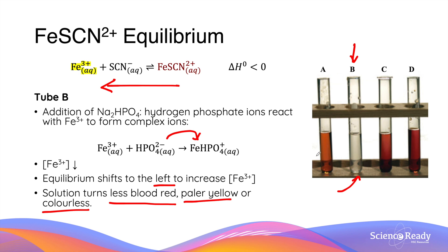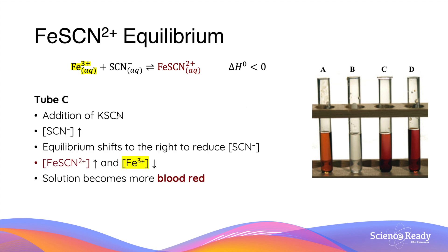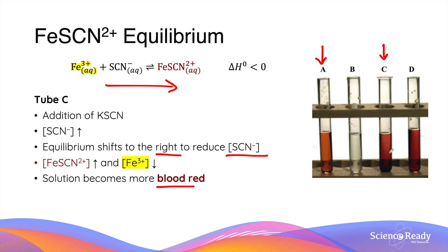Comparing test tube B to test tube A, the reference control, test tube B has a much paler or more transparent appearance. Adding more potassium thiocyanate increases the concentration of thiocyanate ions, which shifts the equilibrium to the right in order to reduce that concentration. As the equilibrium shifts right, the concentration of iron thiocyanate increases while iron 3+ decreases, causing the solution to become more blood red. Comparing test tube C to test tube A, the blood red appearance is slightly more intense and darker.